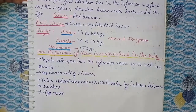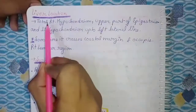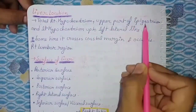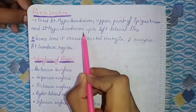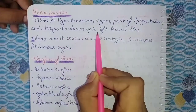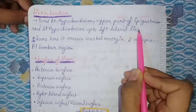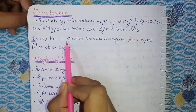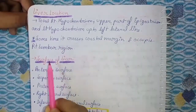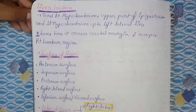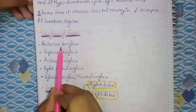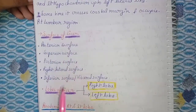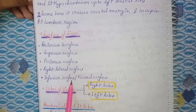The location of the liver: total right hypochondrium, upper part of epigastrium, and left hypochondrium up to the left lateral line. Sometimes it crosses the costal margin and occupies the right lumbar region. The surfaces of the liver are: anterior surface, superior surface, posterior surface, right lateral surface, and inferior (visceral) surface.